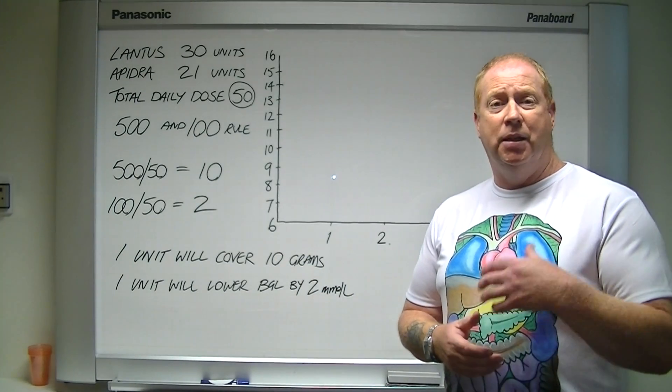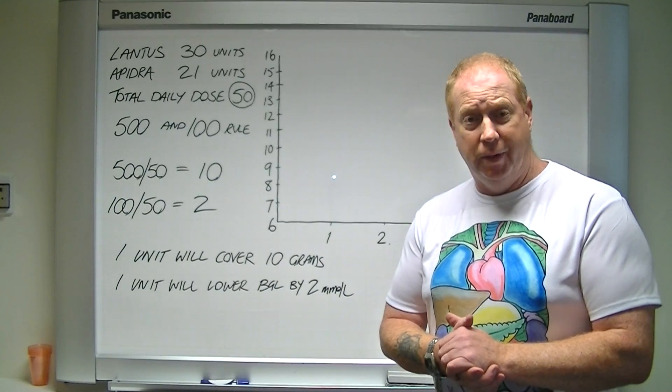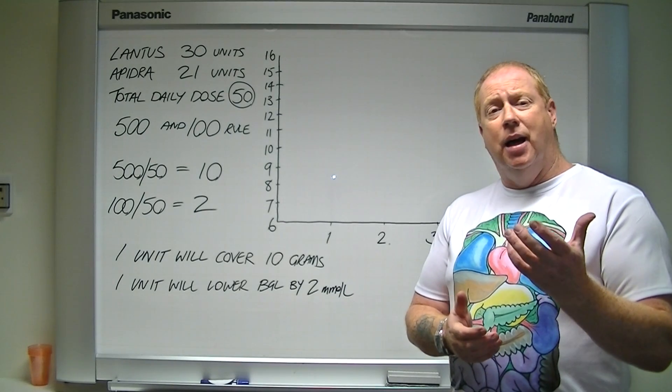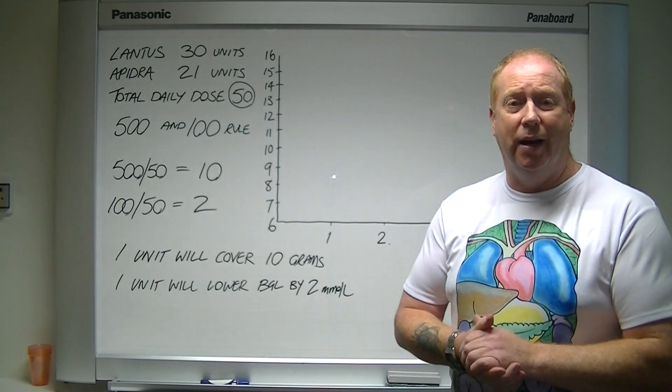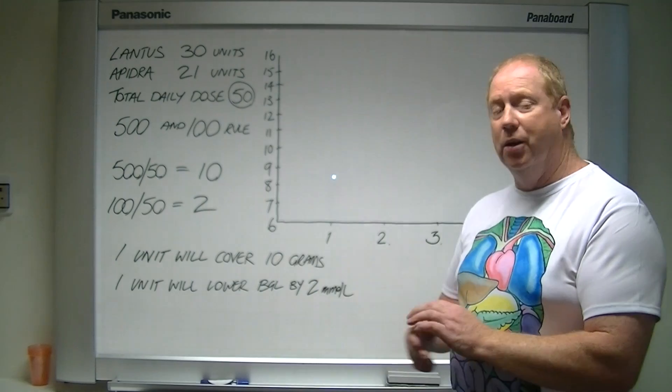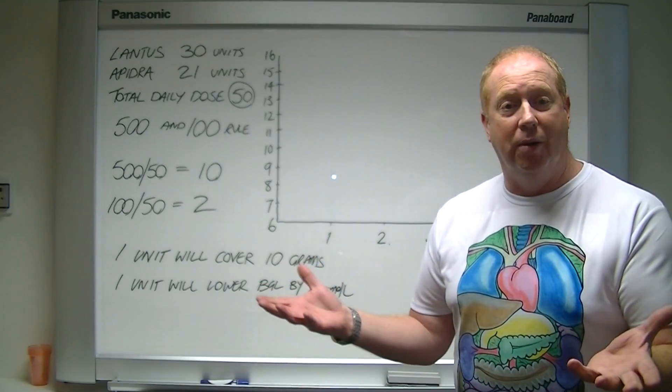For example, if I'm eating 60 grams of carbohydrate at a meal, that's four serves in old money, then I will need six units of insulin. I just simply divide the 60 by the 10 gram increments. So six units of insulin will cover that 60 grams.